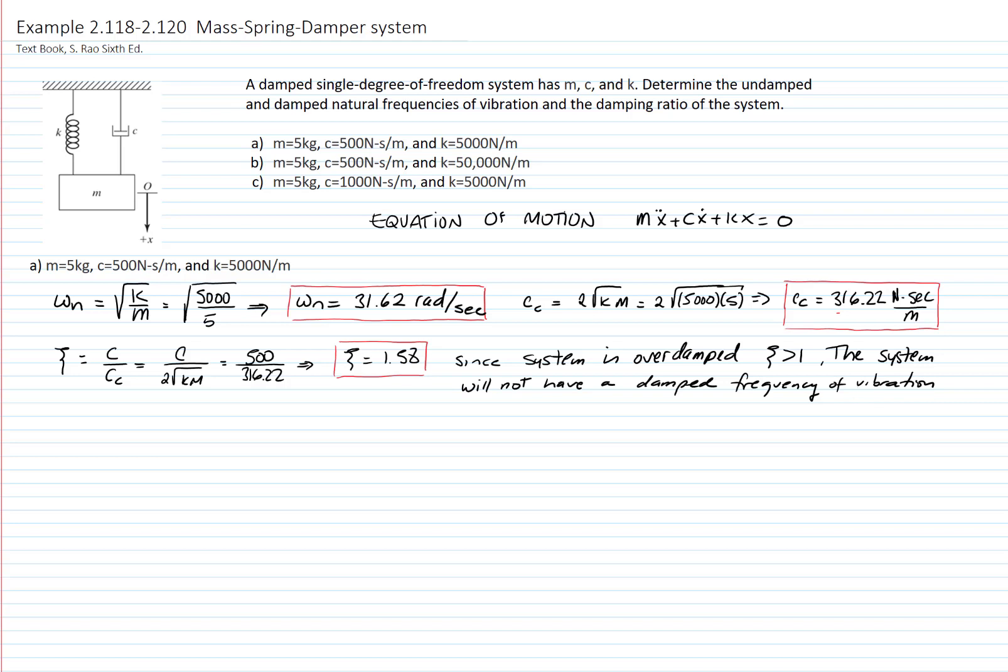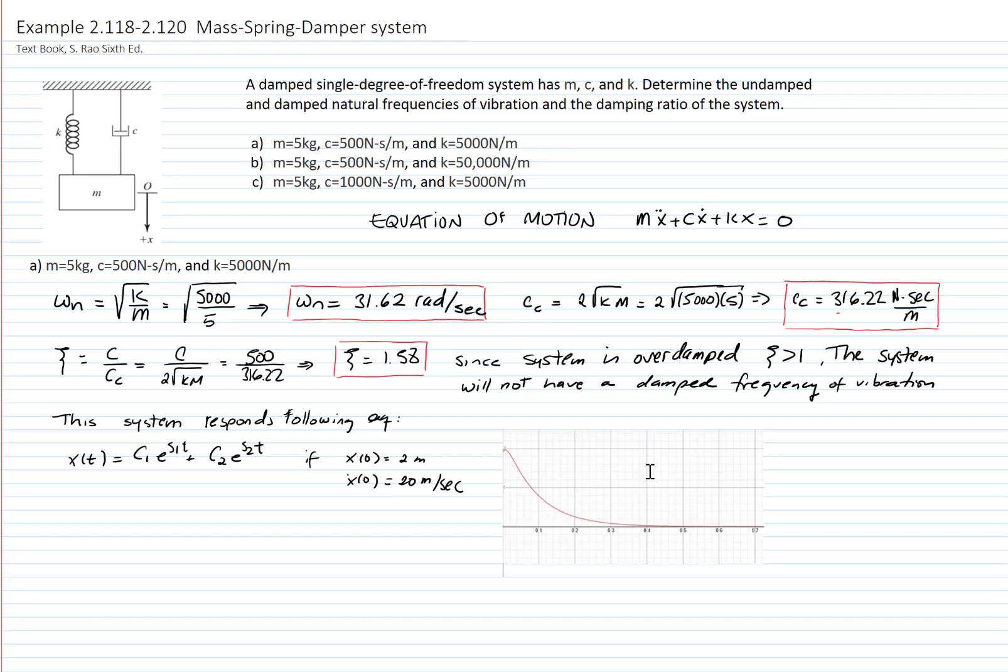This system responds with the following equation. As a function of time, it equals c1 exponential to s1t plus c2 exponential to s2t. s1 and s2, as you know, are the roots of the characteristic equation. Please look into your formula sheet and your theory to find out the values of those constants. If we have an initial condition equal to the displacement 2 meters and the velocity equals 20 meters per second, we have this curve over here.